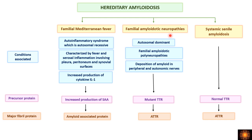Familial amyloidotic neuropathies is an autosomal dominant condition with familial amyloidotic polyneuropathy, featuring amyloid deposition in peripheral and autonomic nerves. The precursor protein is mutant transthyretin produced by the liver, and the major fibril protein is amyloid transthyretin protein. Systemic senile amyloidosis involves monomers of normal transthyretin molecules that get deposited, again forming amyloid transthyretin protein as the major fibril protein.